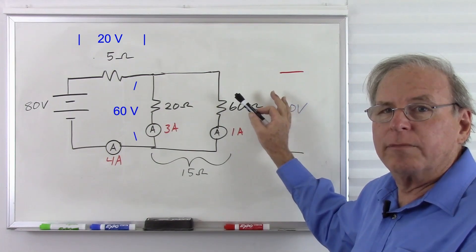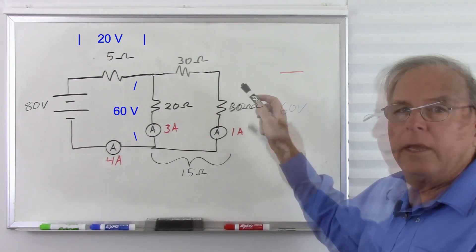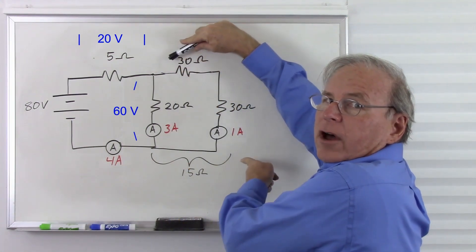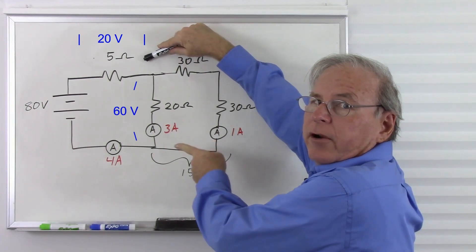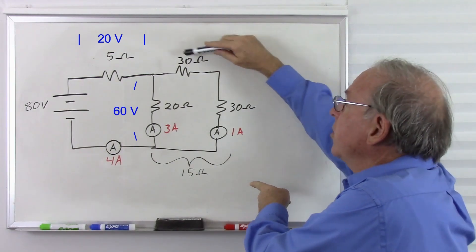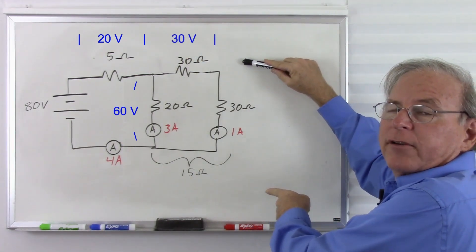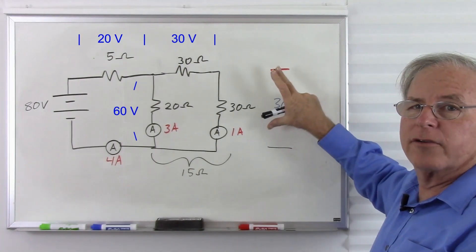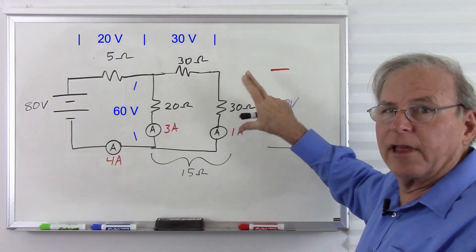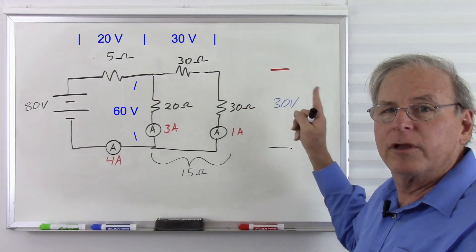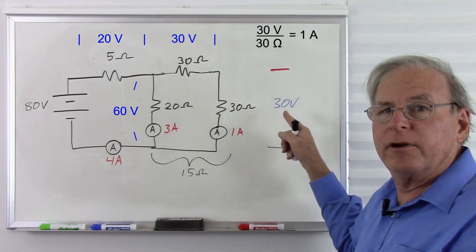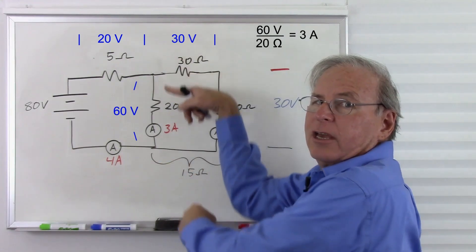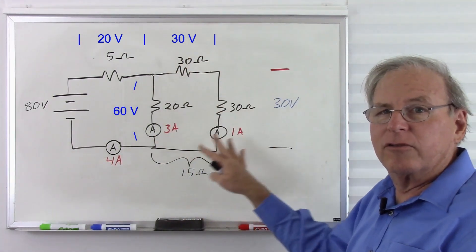Zooming back in to split the two series resistors apart: the 60 volts is across both resistors together. With two equal 30 ohm resistors and 60 volts total, we lose half the voltage at the midpoint — so 30 volts across each resistor. Checking: 30 volts divided by 30 ohms equals 1 amp. And 60 volts across the 20 ohm branch gives 3 amps. The whole circuit still balances out, and we've calculated all currents and voltages.